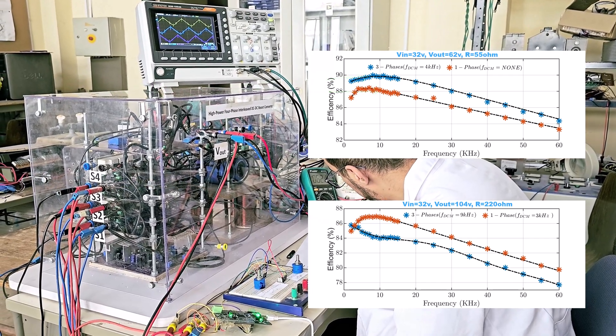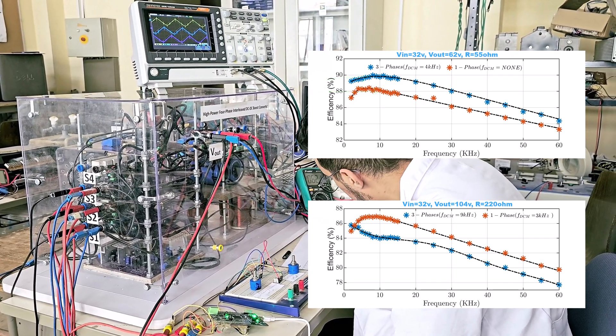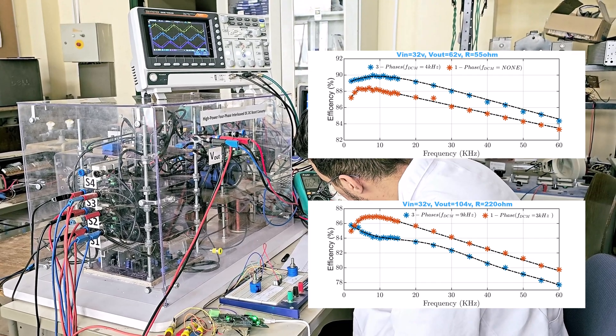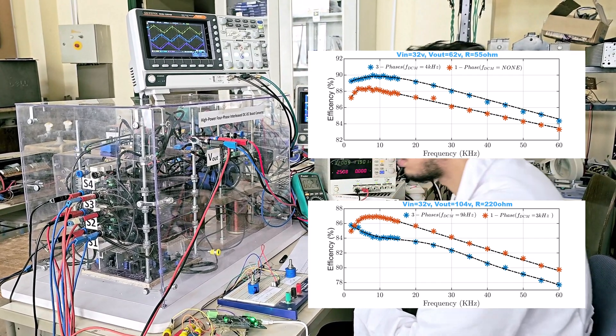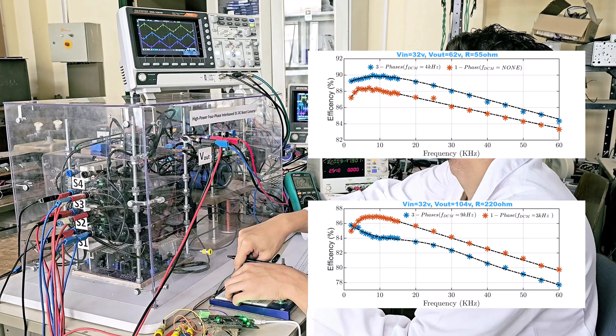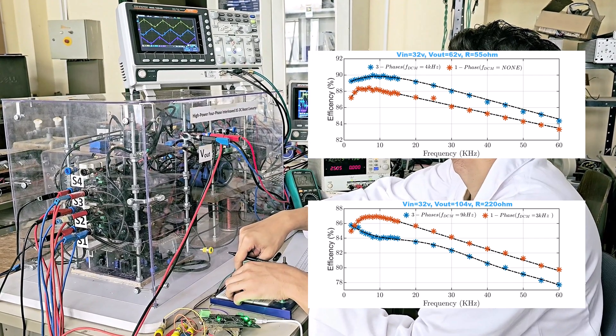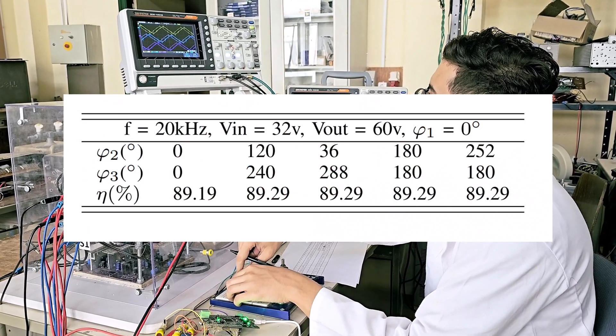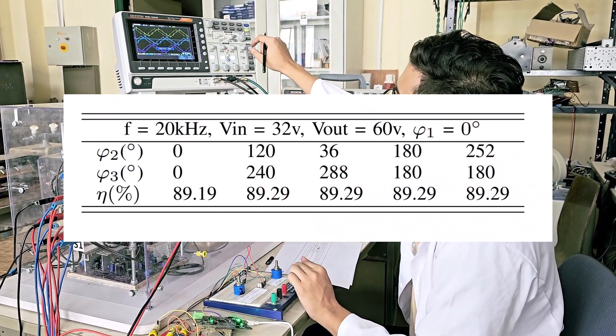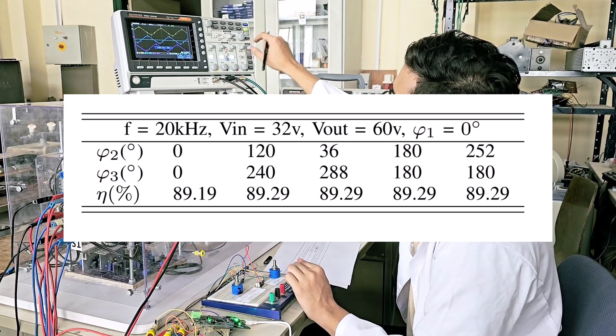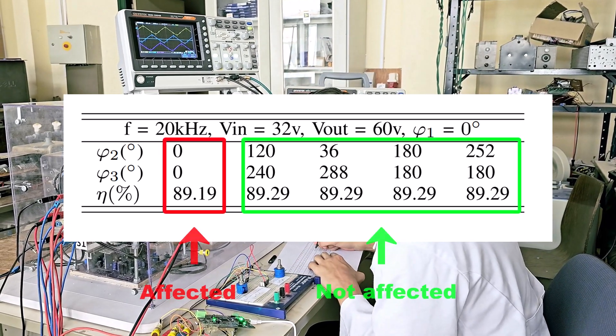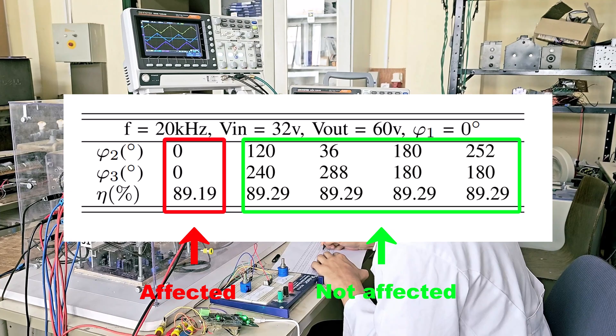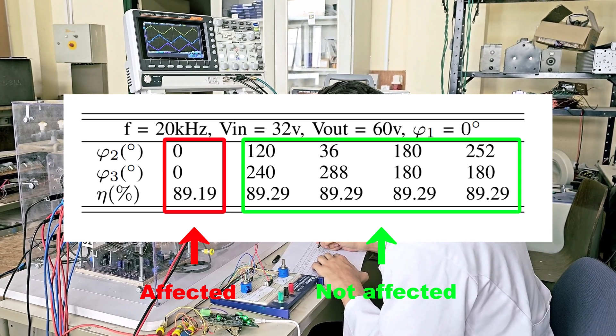We also conducted experiments on three-phase and single-phase converters under various conditions, concluding that the impact of multiphasing on efficiency varies. It can be beneficial or not, depending on the situation. We observed that adjusting the phase shift under different operating conditions affects efficiency only in the worst-case scenario, where all phases were in parallel and the current ripple was at its maximum.